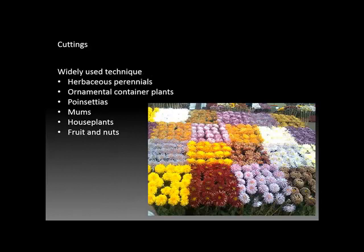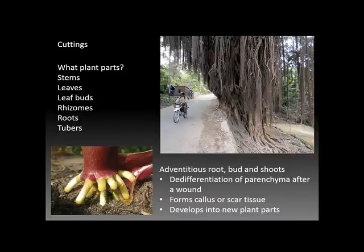Cuttings are also frequently used for herbaceous perennials, container pot plants—notably poinsettias and mums—along with many house plants and some fruit and nut trees. A variety of plant parts can be used to take cuttings: stems, leaves, leaf buds, rhizomes, roots, or tubers, depending on the plant. All make good propagation material for cuttings.